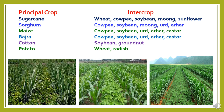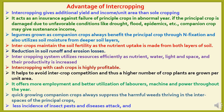Here we have some examples of intercropping where the selection of principal crop and intercrop is demonstrated. Where sugarcane is the main crop, it can be intercropped with wheat, cowpea, soybean, moong, and sunflower. Where sunflower is the principal crop, we can take cowpea, soybean, moong, urad, and arhar as intercrop. Where maize is the principal crop, it can be intercropped with cowpea, soybean, urad, arhar, and castor. In case of cotton, it can be intercropped with soybean and groundnut, and potato is cultivated with wheat and radishes as intercrops.